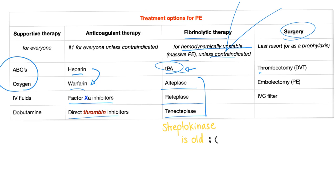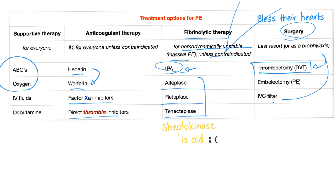Surgery: thrombectomy, embolectomy, or thromboembolectomy, performed by an interventional radiologist. IVC filter for prophylaxis in cases of recurrent PE.